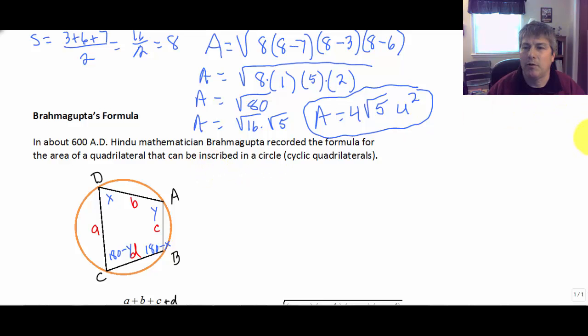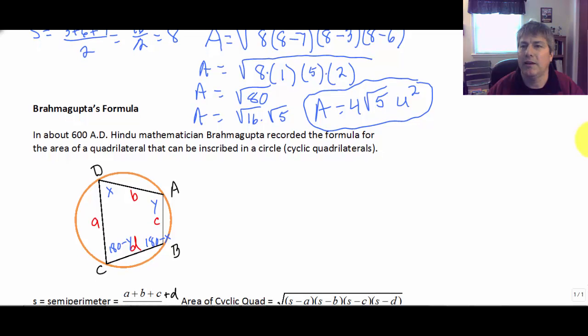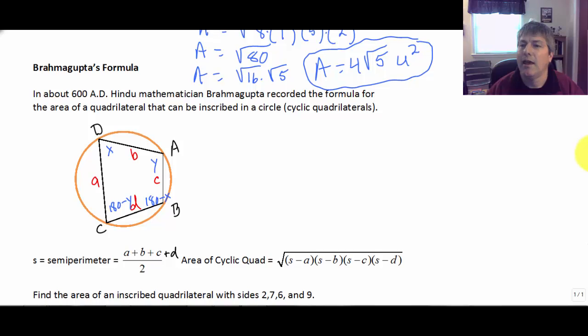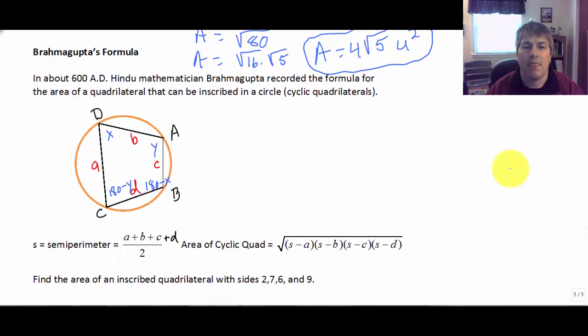So let's take a look at Brahmagupta's formula. There obviously must be some similarities between this and Hero's formula. And there are. Brahmagupta's formula also uses the concept of semi-perimeter. Where semi-perimeter is the addition of all the lengths of all four sides divided by 2. Again, not an average.